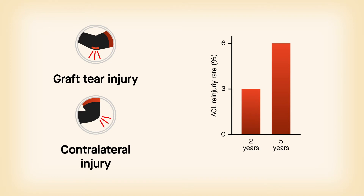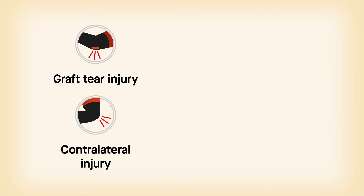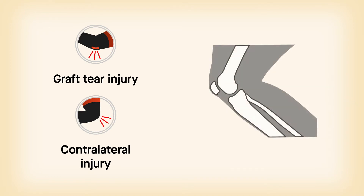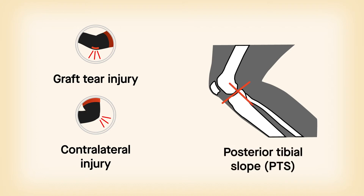One factor that could contribute to these statistics is anatomy. Some studies have shown that a high posterior tibial slope, or PTS, is a predictor of graft tear or contralateral ACL injury following ACL reconstruction. Others, however, have failed to produce supporting evidence.